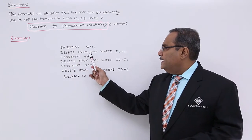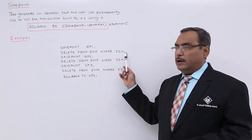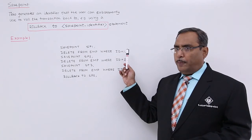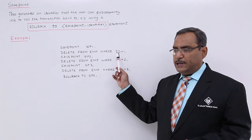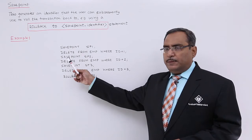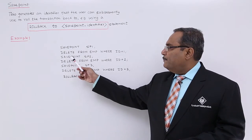Delete from EMP, where ID is equal to 1. So, that is one delete operation we are doing on the EMP table. Again, we are establishing another SavePoint, SavePoint SP2.